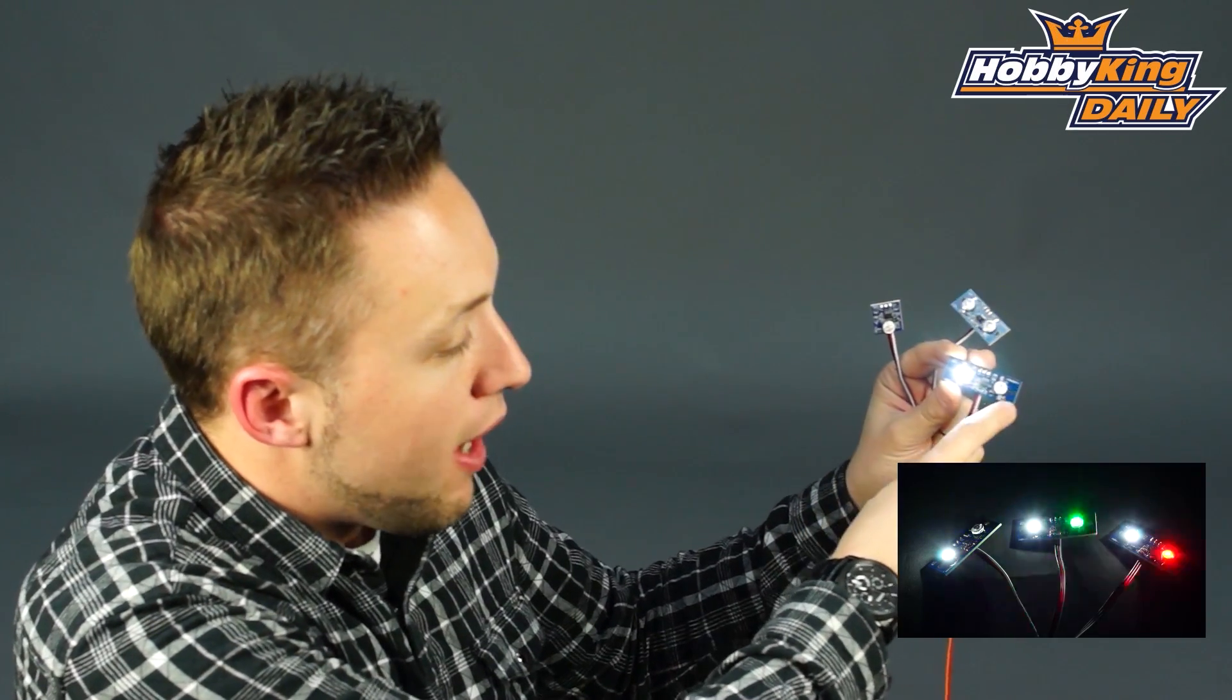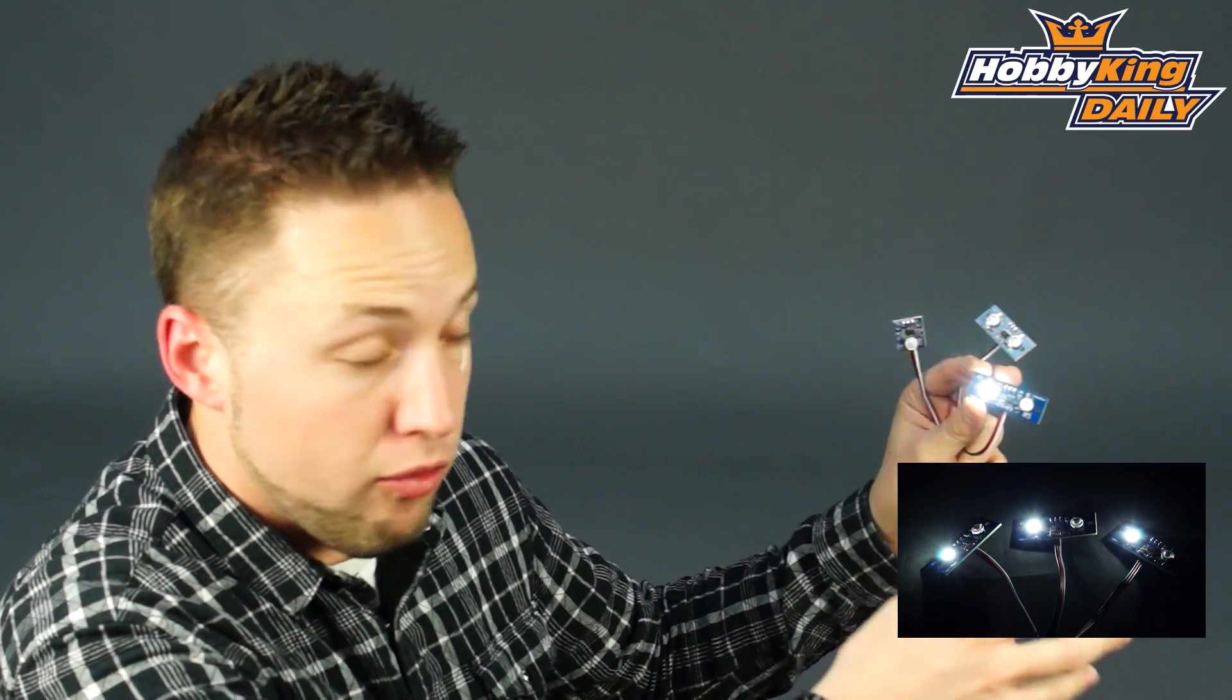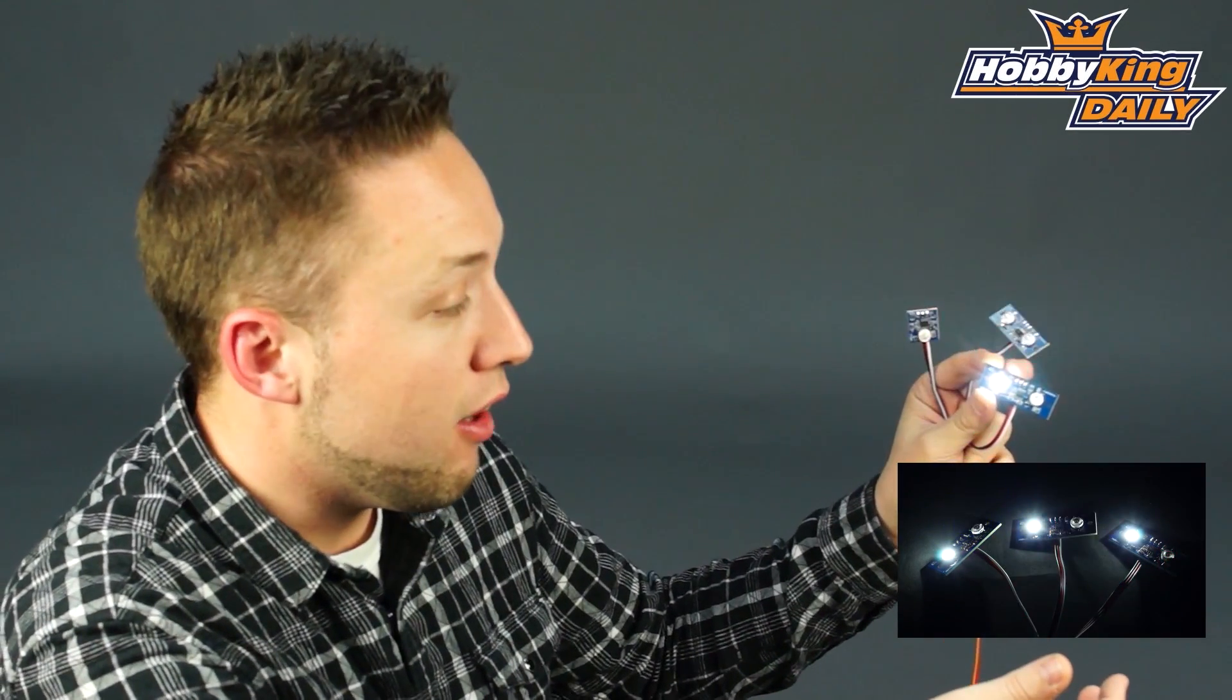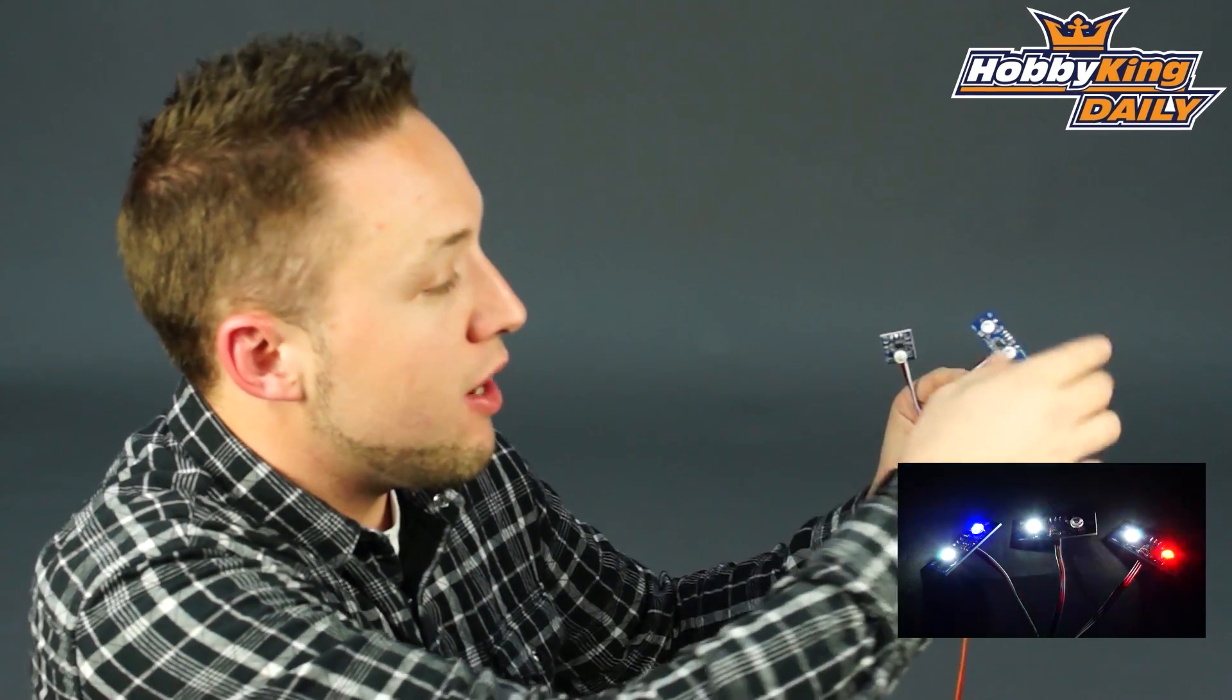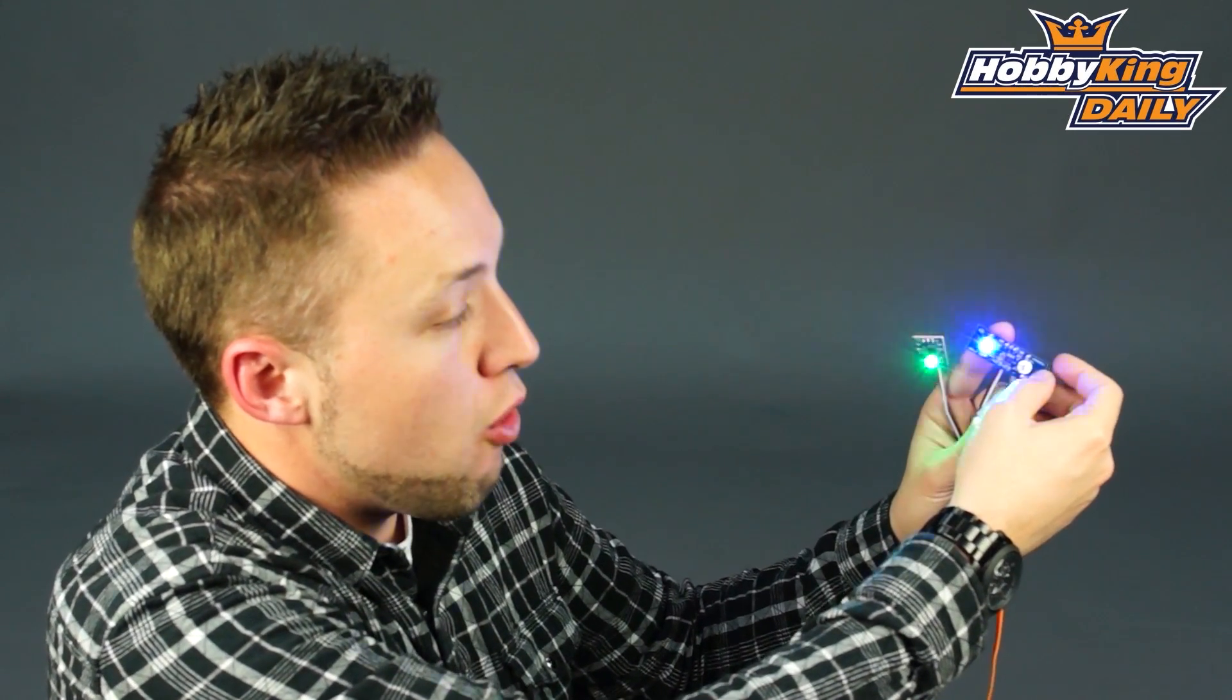Now for this model here with the solid white and the strobe, we have four different colors as well. So you've got the green, blue, red, and also this one here, which has the red and the blue strobe.